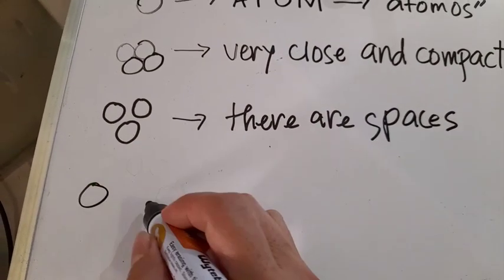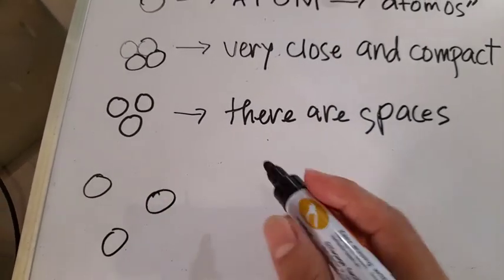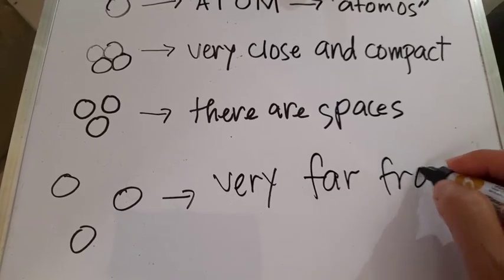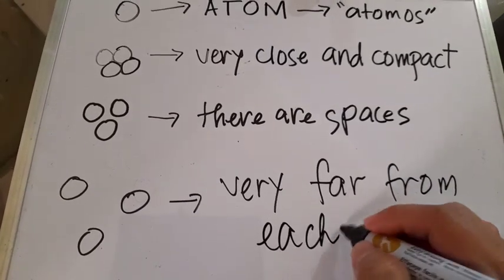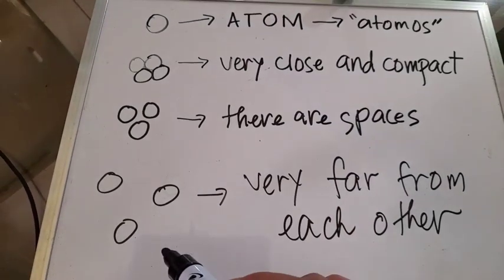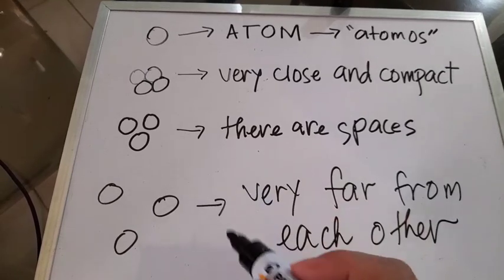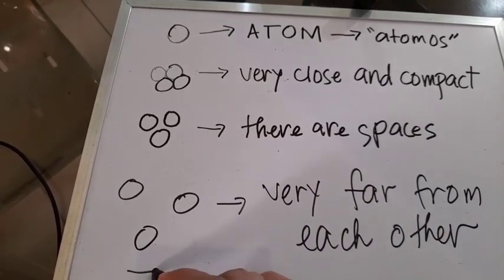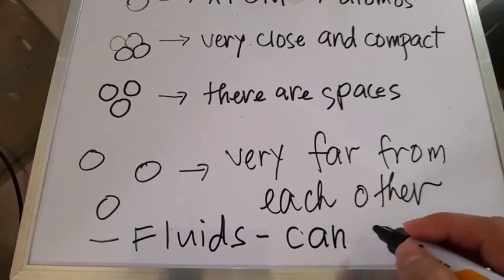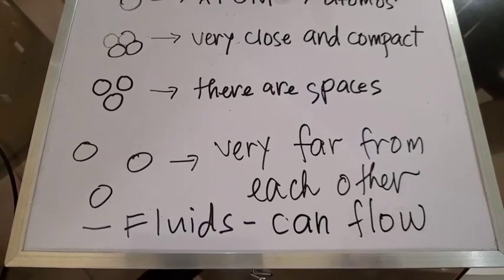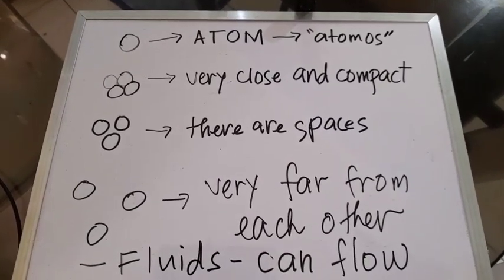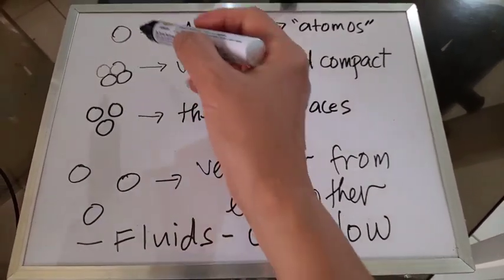For gases, there are very wide spaces between the particles — the particles are very far from each other and can move freely. Like liquids, gases also have the ability to flow. Therefore, both liquids and gases are called fluids. These particle arrangements describe solids, liquids, and gases, and we can explain the particle nature of matter using this particle model.